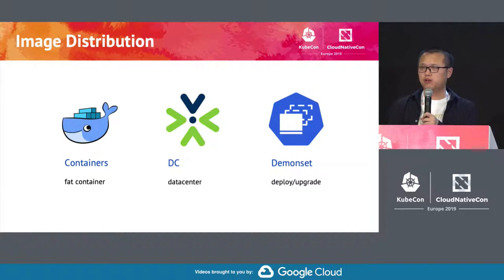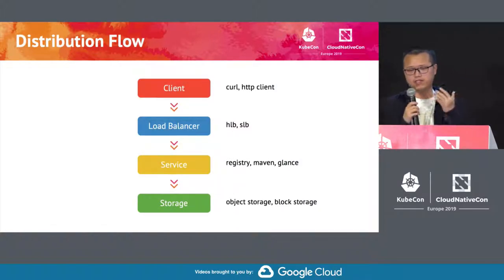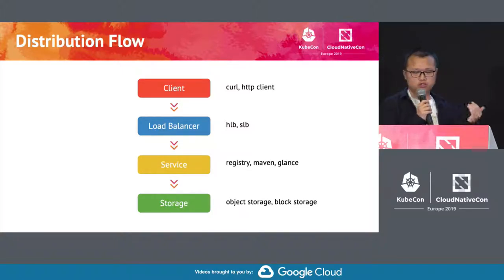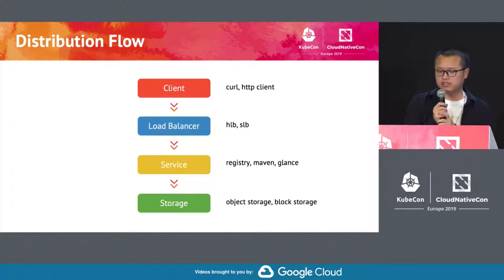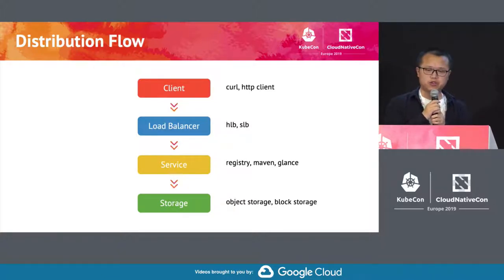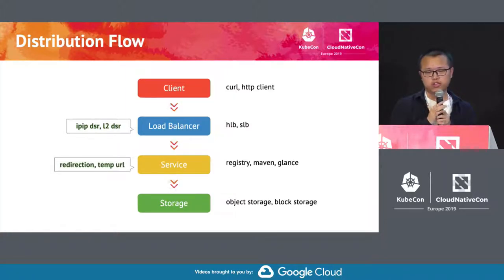So that means we definitely need to improve our current distribution infrastructure. Let's take a look at how it is today. Basically, you have several layers. At the bottom is the storage. And then you build a registry service or Maven repository on top of the storage. And then you create a load balancer to expose that as a service, and the clients talk to the load balancer. Looking at this structure, it is very traditional and very simple, but it doesn't solve our scalability problem. What you can do is configure direct server return on the load balancer, so the data can go from the service to clients directly. And if you can control the service, you can add some redirection so all the data does not have to go through the service.